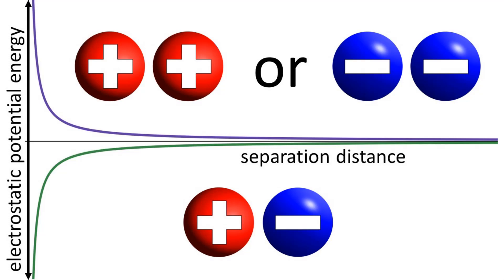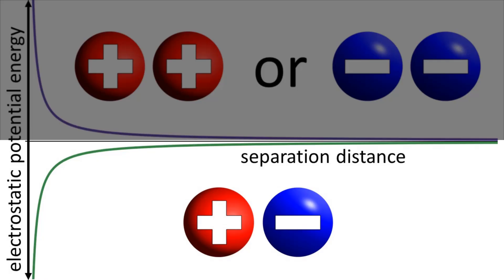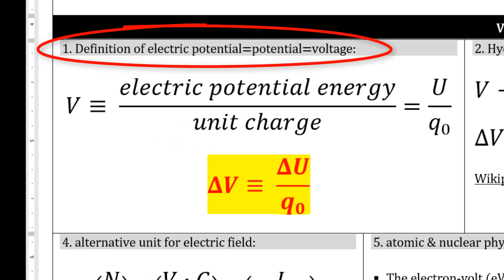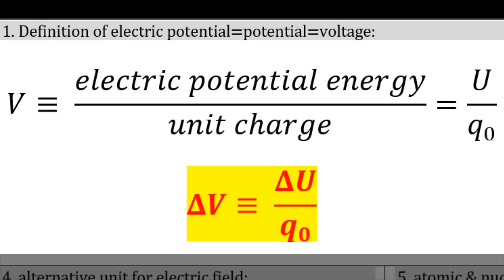The electrostatic potential energy associated with two like charges is considered positive. The electrostatic potential energy associated with two opposite charges is considered negative. Here's where we introduce voltage. Notice that there are three terms that all mean the same thing: electric potential, potential, and voltage all mean the same thing. I typically just try to use the term voltage for the sake of simplicity.